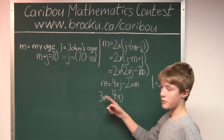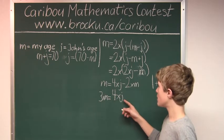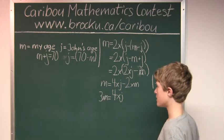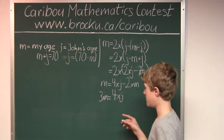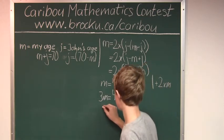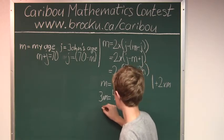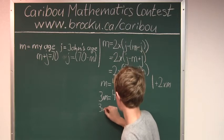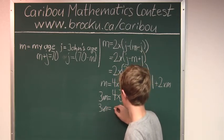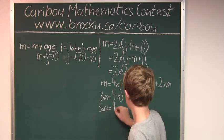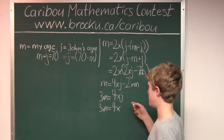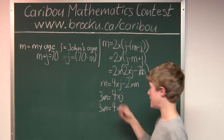Now, we have 3 times m equals 4 times j, but we would substitute this for j. So, it would actually be 3 times m, and that would be 70 minus m.